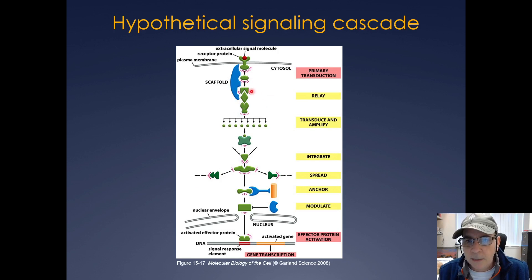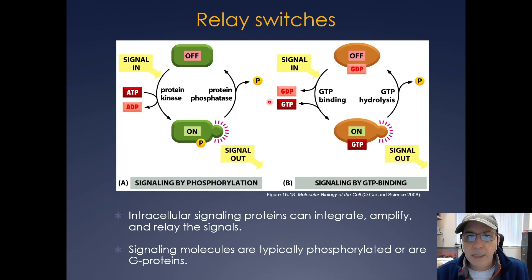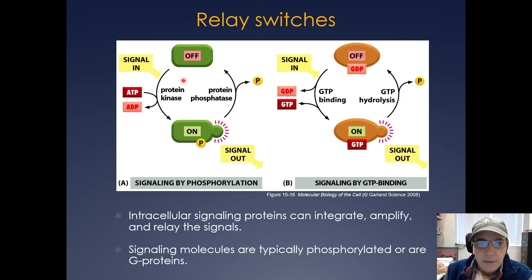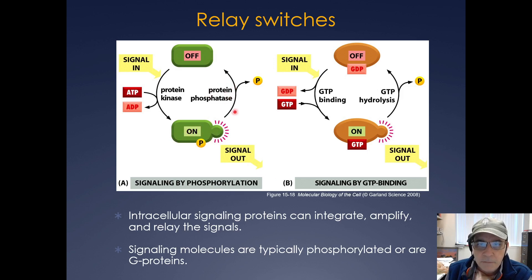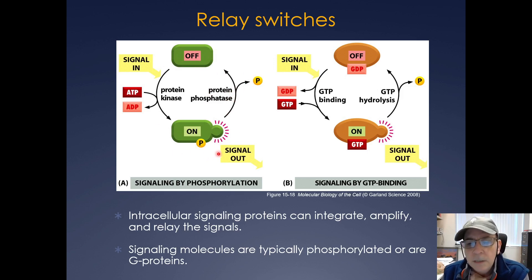Let's focus on two main types of relay switches. First, the kinase cascade: a signaling molecule comes in, activates a protein kinase, and that leads to phosphorylation of the protein, giving a signal out. The whole process is reversed by a protein phosphatase, which removes the phosphate and returns the protein to its resting state. This is signaling by phosphorylation.